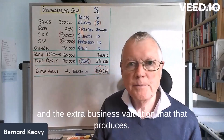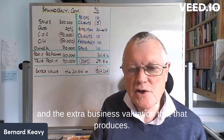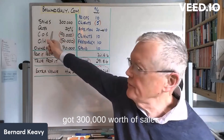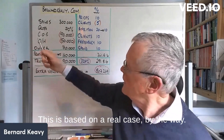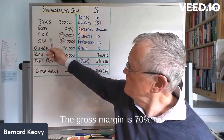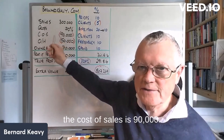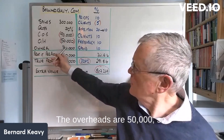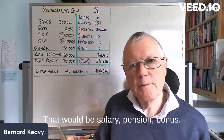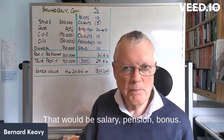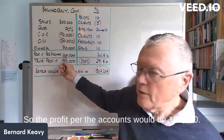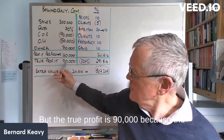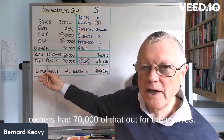You'll be astonished at the extra profit and the extra business valuation that produces. Our starting point: we've got £300,000 worth of sales — this is based on a real case, by the way. The gross margin is 70%, so the cost of sales is £90,000. Overheads are £50,000, and the owner takes out £70,000 in their own package — that would be salary, pension, and bonus.